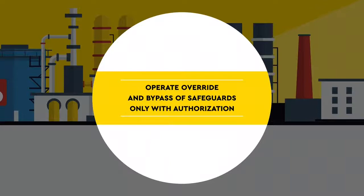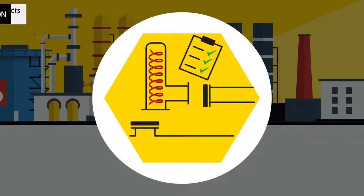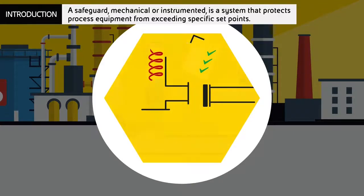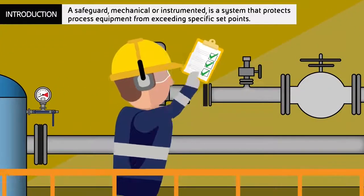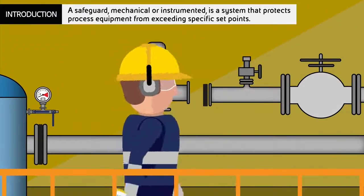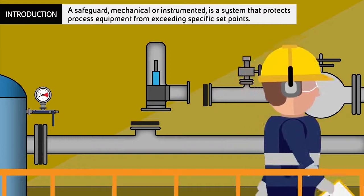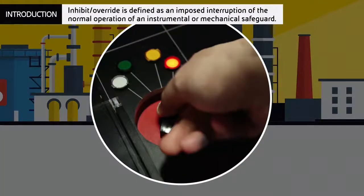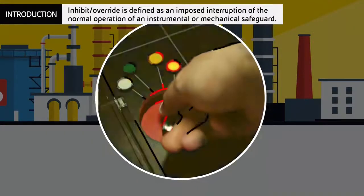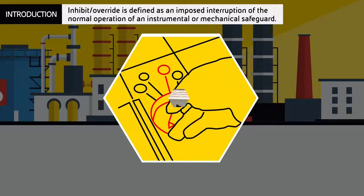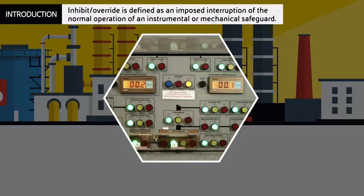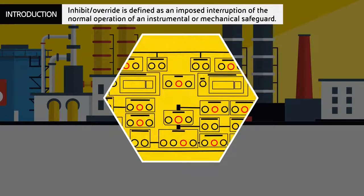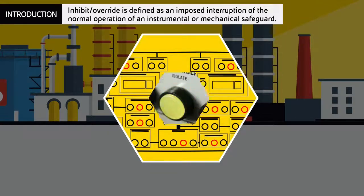Operate override and bypass of safeguards only with authorization. A safeguard, mechanical or instrumented, is a system that protects process equipment from exceeding specific set points. Inhibit override is defined as an imposed interruption of the normal operation of an instrumental or mechanical safeguard.